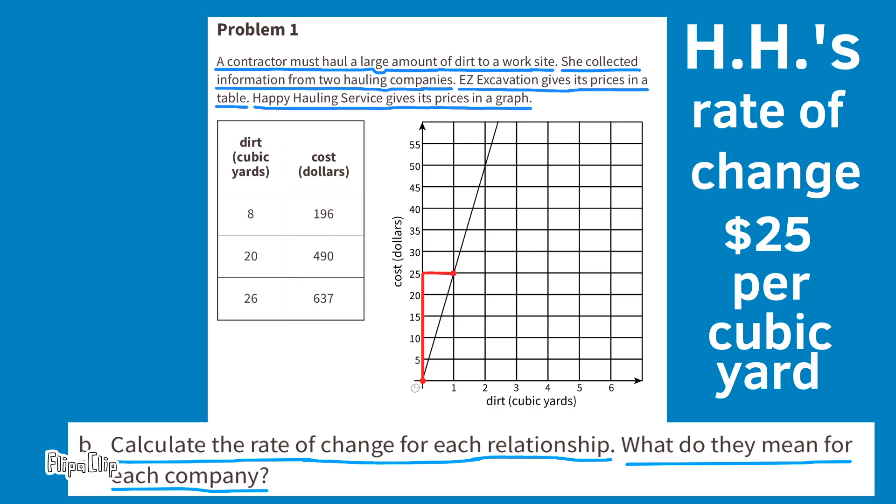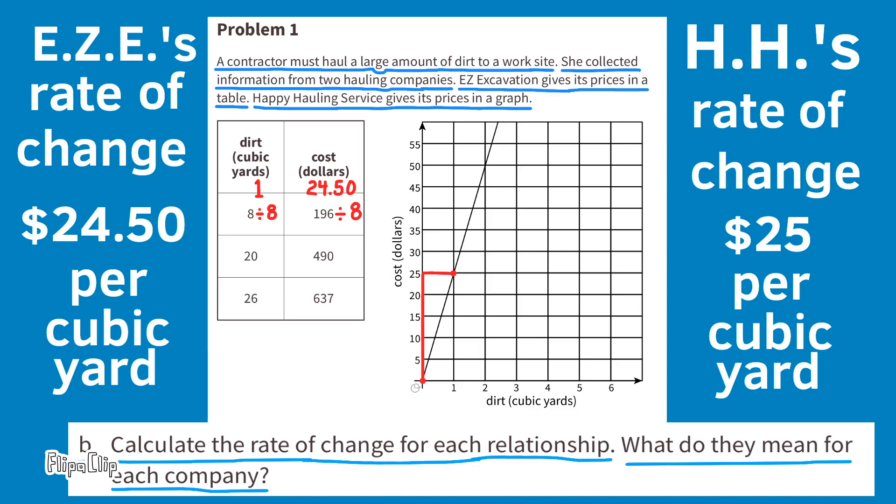Now let's take a look at Easy Excavation's table. 8 divided by 8 equals 1, so we have 1 cubic yard, and 196 divided by 8 equals $24.50, so 1 cubic yard costs $24.50. Easy E's rate of change is $24.50 per cubic yard.